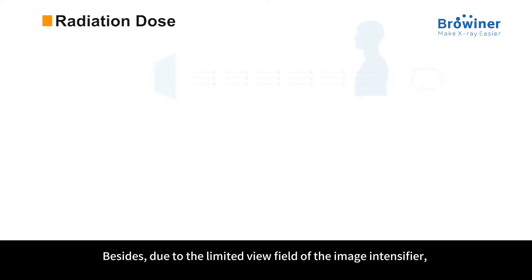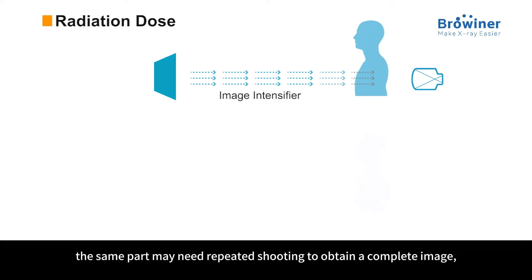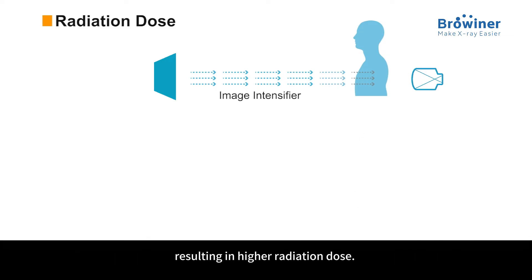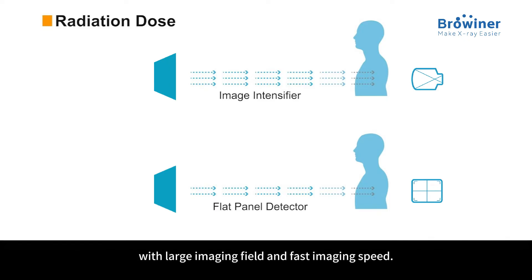Besides, due to the limited view field of the image intensifier, the same part may need repeated shooting to obtain a complete image, resulting in a higher radiation dose. In contrast, the flat panel detector provides better radiation protection with its large imaging field and fast imaging speed.